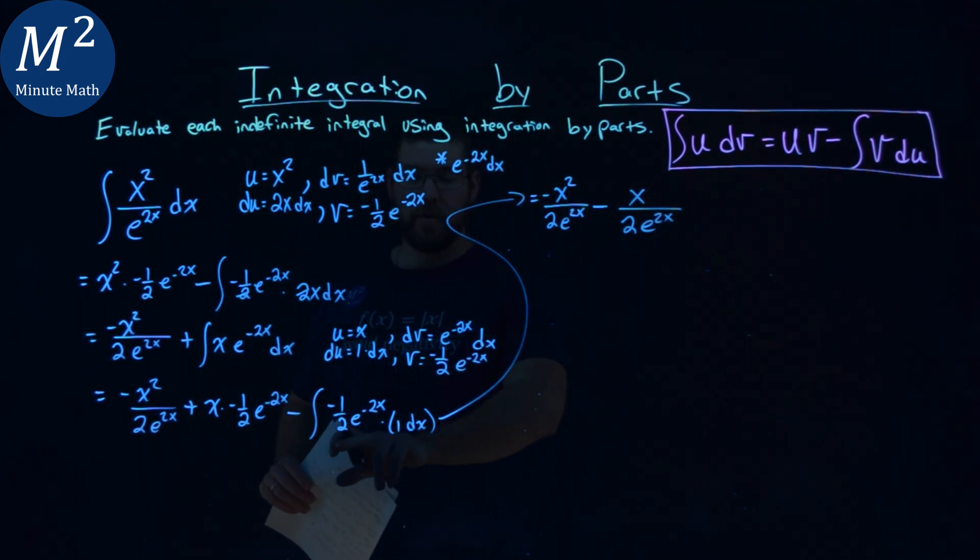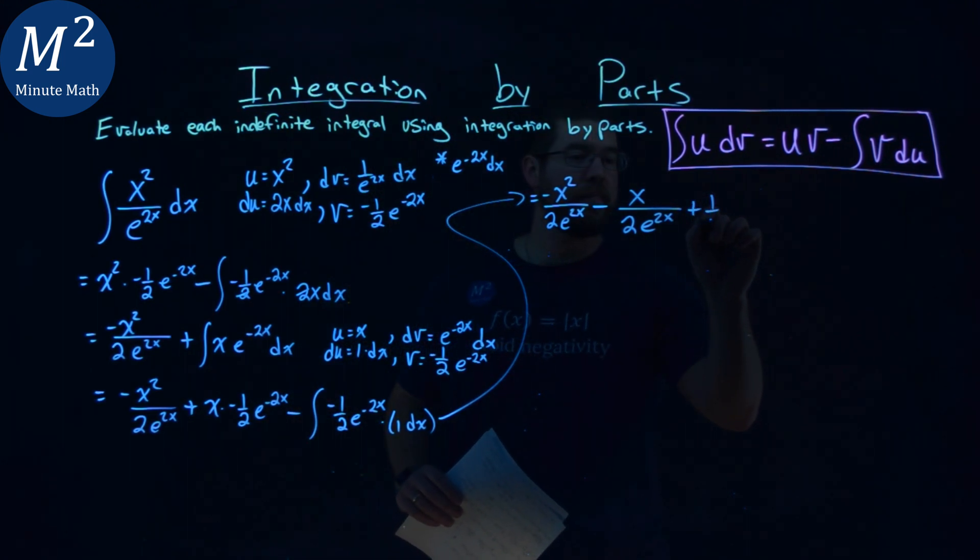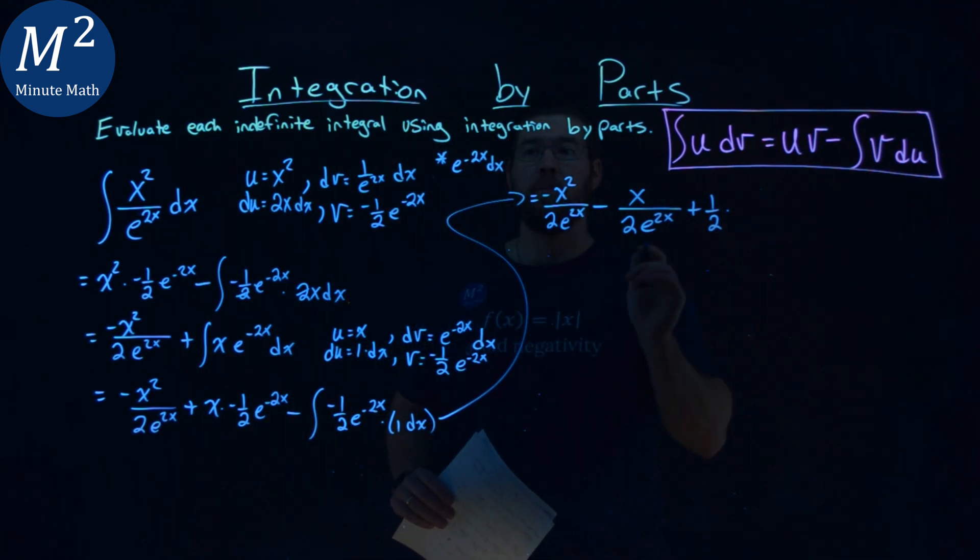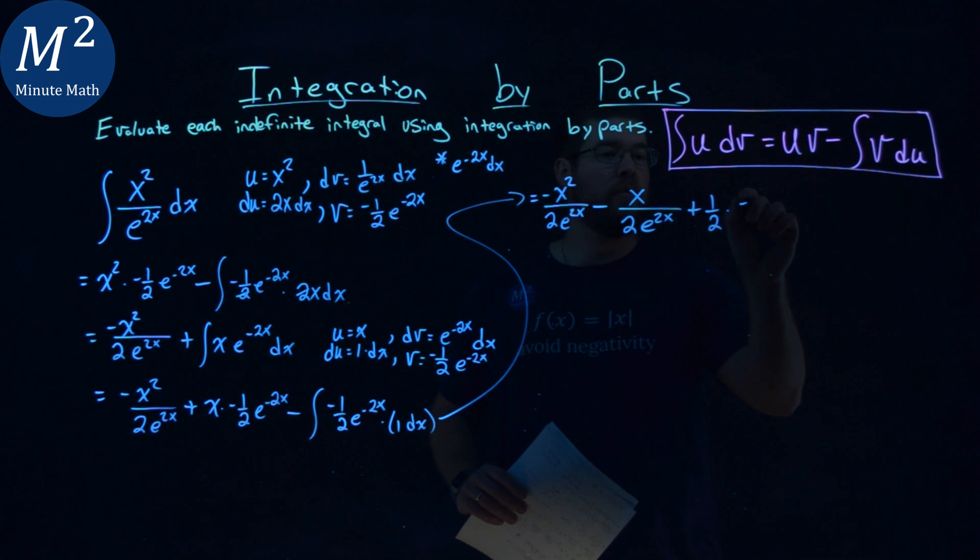Then, this integral here, let's pull out a negative 1 half, so we have positive 1 half on the outside. And so the integral of e to the negative 2x, we've already found. That is negative 1 half e to the negative 2x power, and we don't forget the plus c.